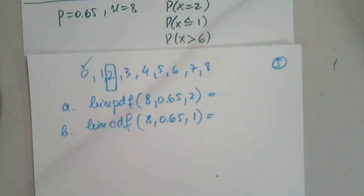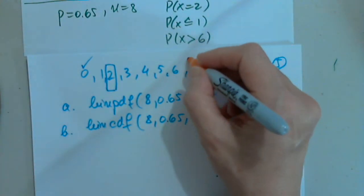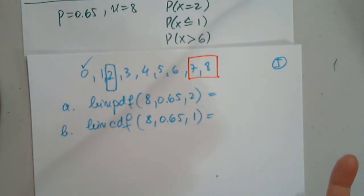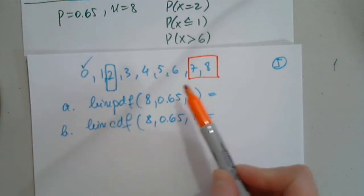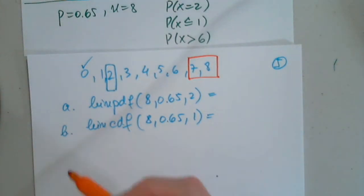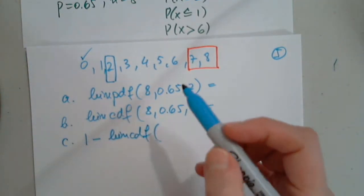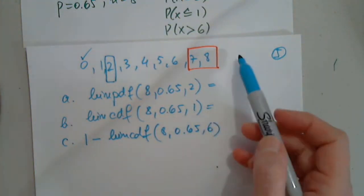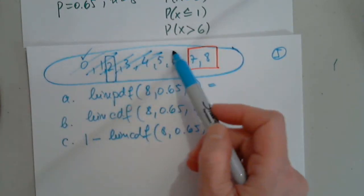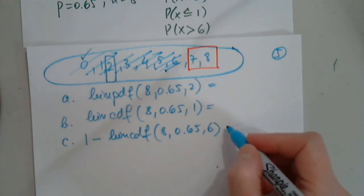Now, this one, it's asking greater than or equal, greater than 6, which is greater than or equal to 7. So, I have two options. I either determine a binomial PDF of 7 plus binomial PDF of 8, right? Or, another option would be 1 minus binomial CDF of 8, 0.65, and inclusive 6. So, from 1, I subtract all this, including 6, to get the probability of 7 plus the probability of 8. So, it doesn't matter which one.